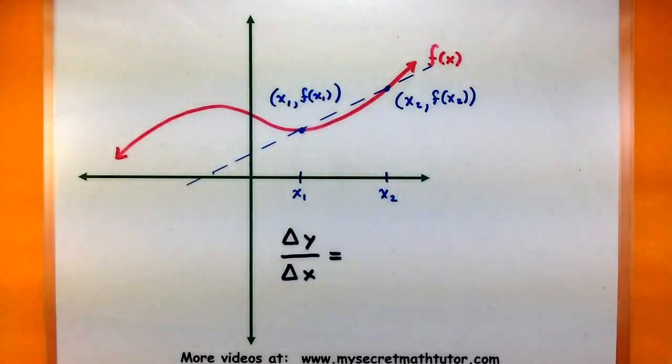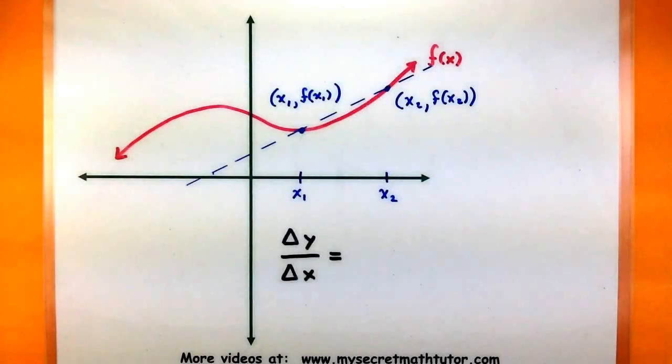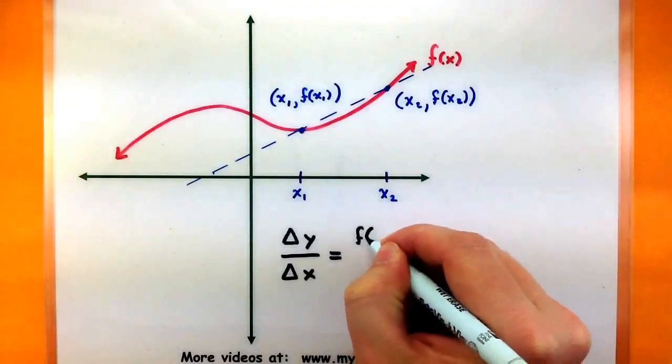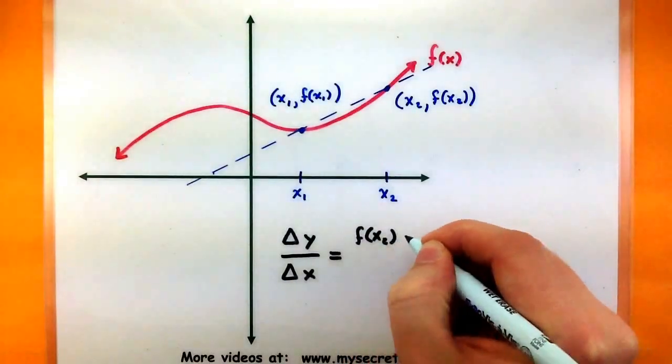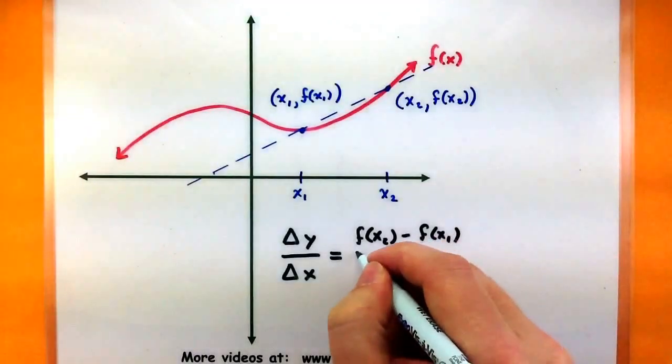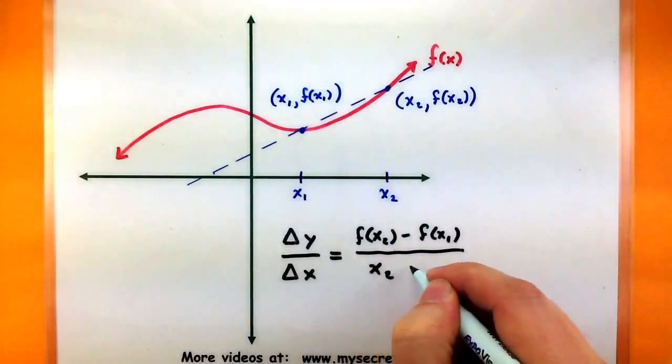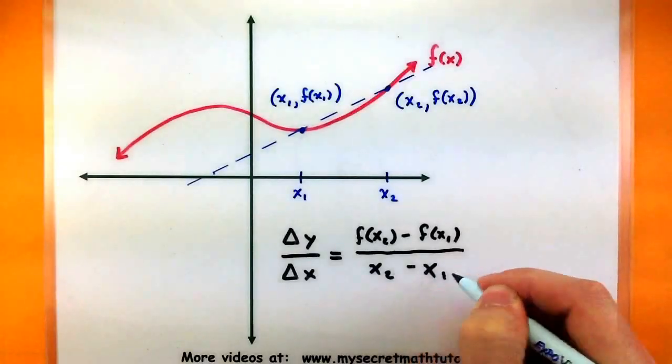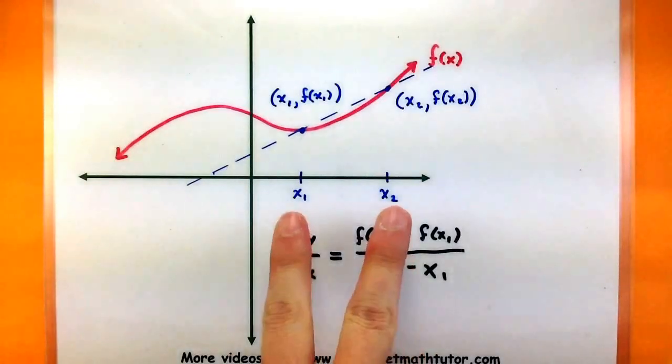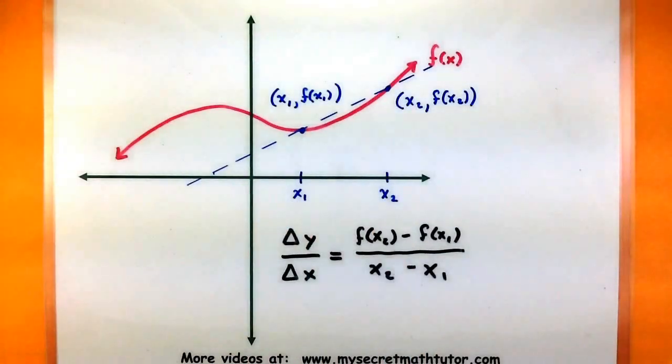Now to compute the slope, basically I'm looking at subtracting the y values divided by subtracting the x values. So I have f of x2 minus f of x1 all over x2 minus x1. So this formula right here will give me the average rate of change for this particular function between these two points, x1 and x2.